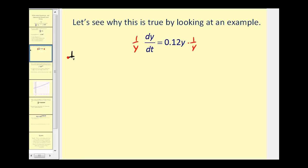If we do that, we would have one over y times dy/dt equals 0.12. Now let's rewrite this in differential form. We have one over y dy equals 0.12 dt. Now let's integrate both sides of the equation.